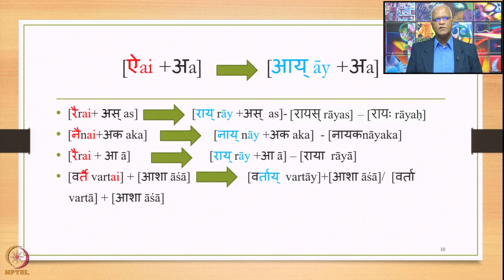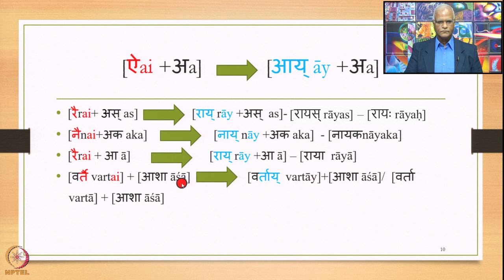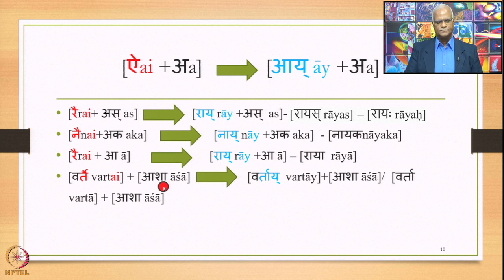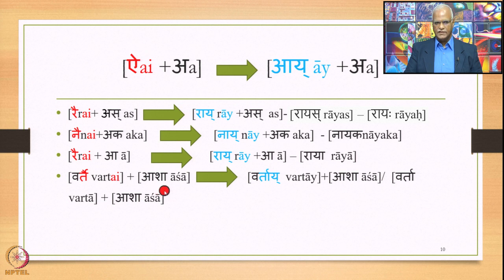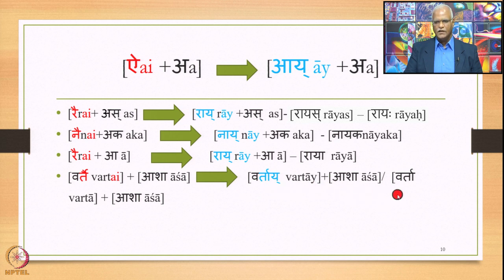These are examples of Sandhi happening within a Pada. When Sandhi happens between two Padhas, here is an example: Vartai Asha. Vartai is the imperative first person singular — Vartai, Vartavahai, Vartamahai — and Asha means hope. When these two words are in close proximity in Samhita mode, Echoyavayavaha applies and Ay is substituted by Ay. So we have Vartai plus Asha, and then optionally Y gets deleted, giving the form Vartai Asha. This is Sandhi between two Padhas.